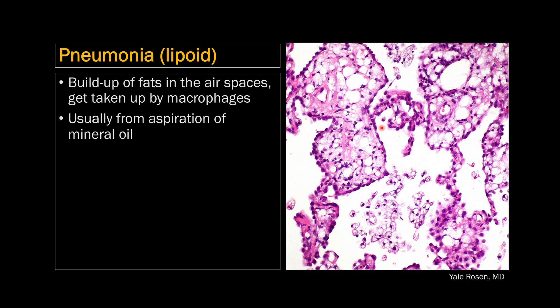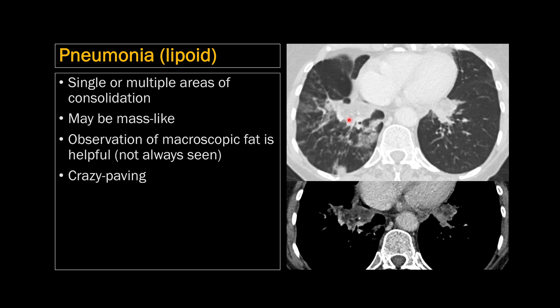Lipoid pneumonia is simply a buildup of fats in the air spaces, taken up by macrophages. It's usually exogenous, from the aspiration of mineral oil that patients take to relieve constipation. Lipoid pneumonia looks like single or multiple areas of consolidation — they can be mass-like, speculated, and can mimic cancer. The key is to look on soft tissue windows for macroscopic fat within the consolidation, though it's not always seen. You'll typically also see signs of aspiration like ground glass opacity and tree-in-bud opacity.